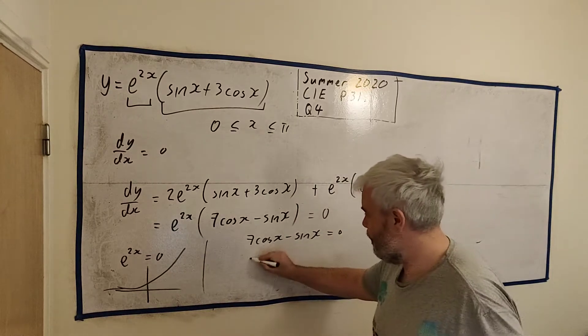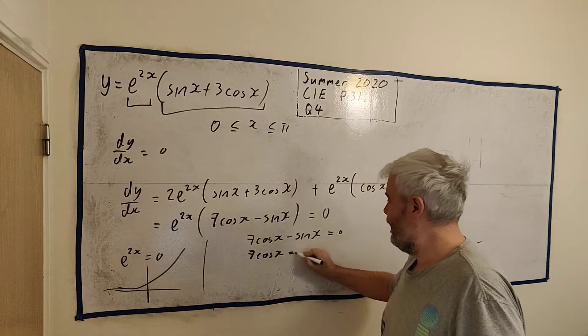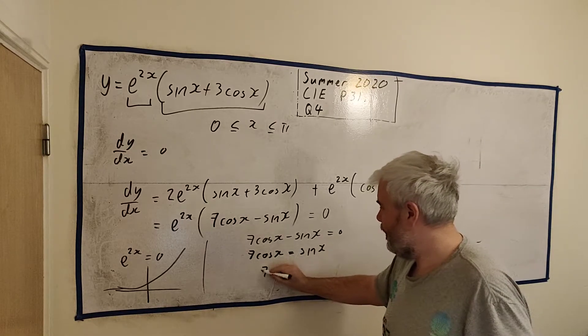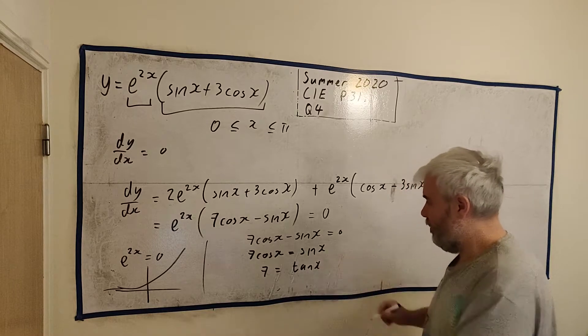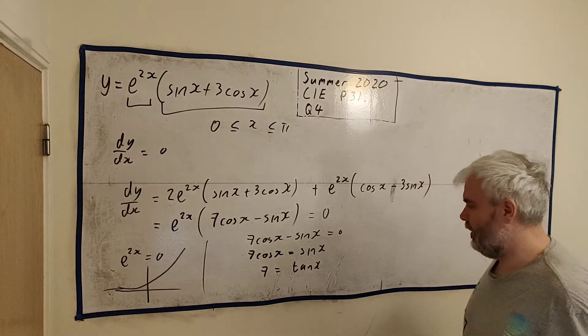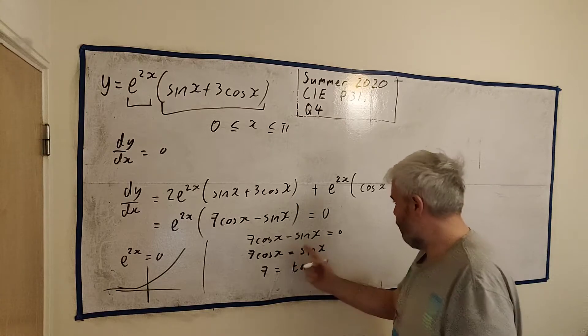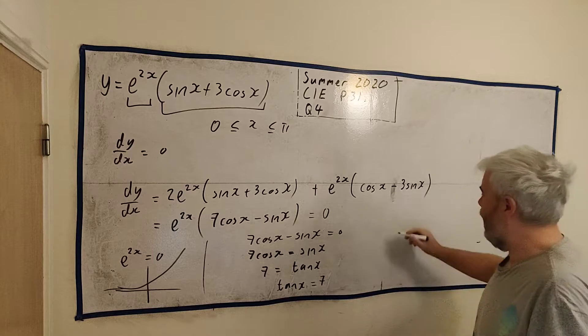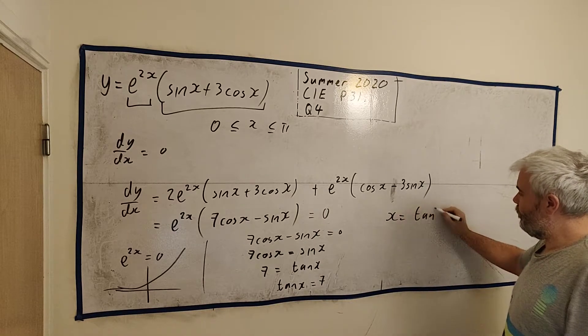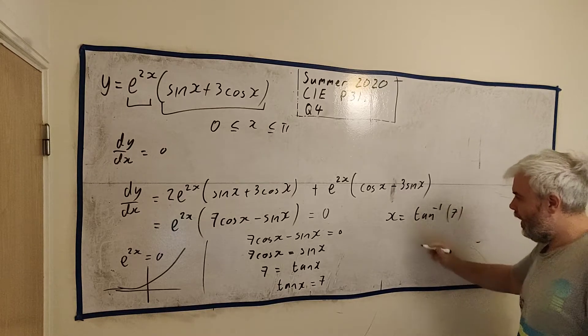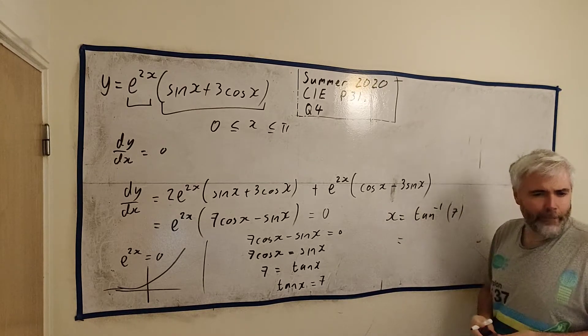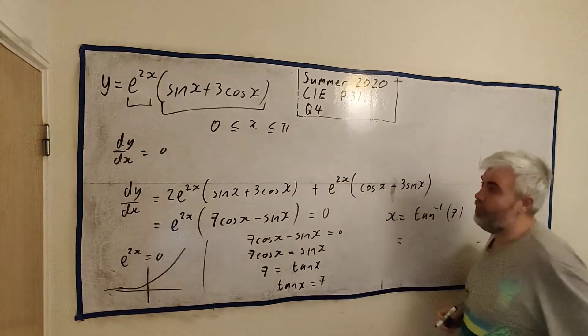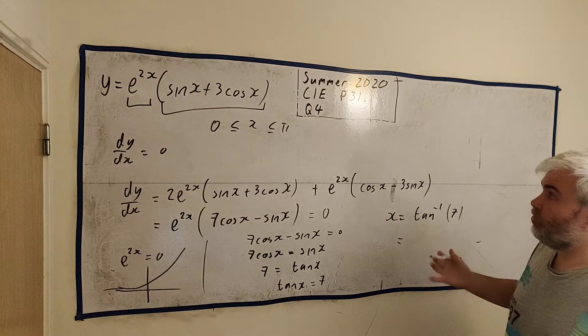We'll have to play around with this a bit. 7 cosine x is equal to sine x. Let's divide both sides by cosine. 7 is equal to tangent x. Sine x divided by cosine x is tangent x. We'll switch these around. Tan x is equal to 7. And x is equal to the inverse tan of 7. And put that in a calculator. Remember, they are asking us in radians. The question is in radians between 0 and pi.